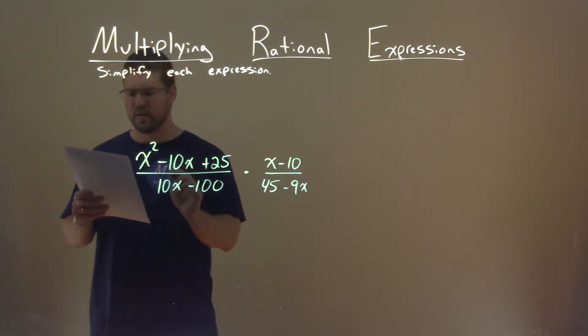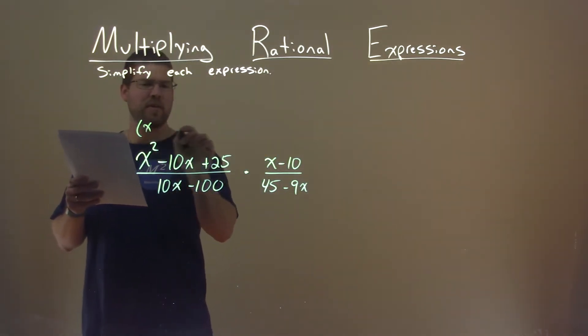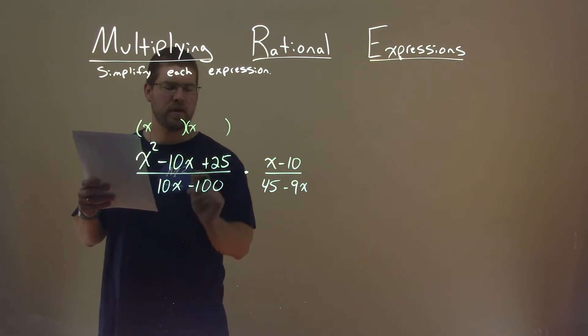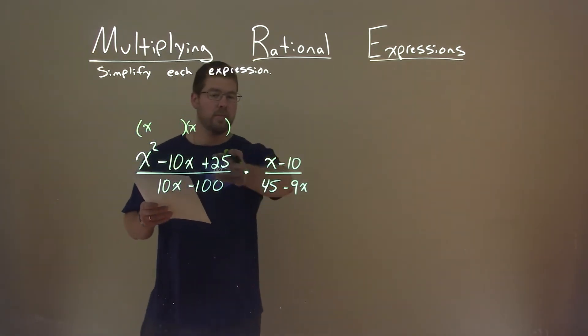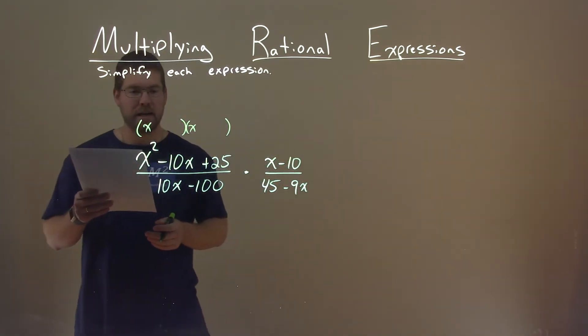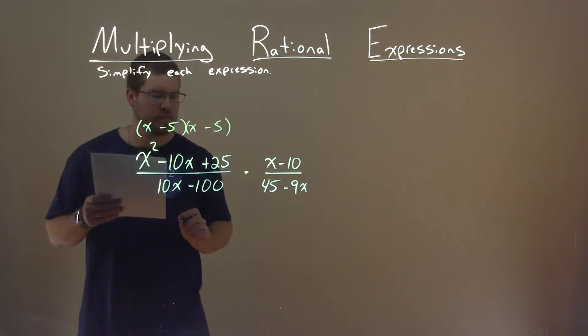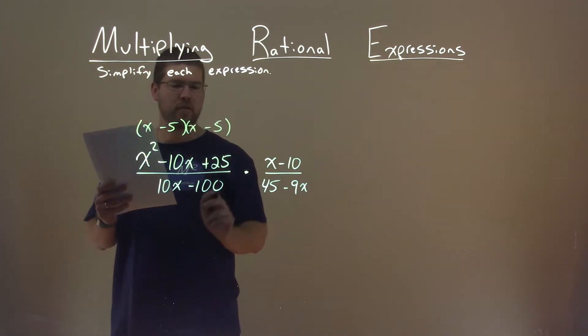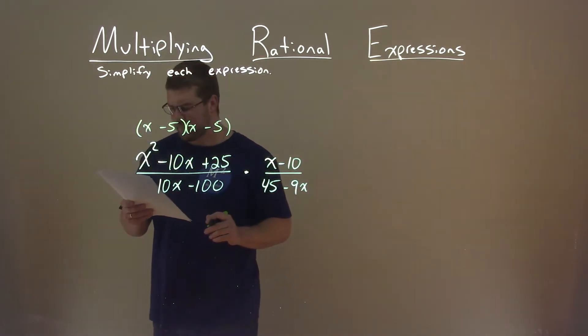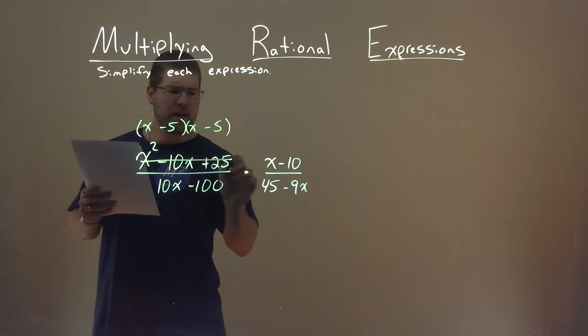Well, this first part right here looks like it factors pretty easily. So let's do that. What two numbers multiply to be positive 25 but add to be negative 10? That's minus 5 and minus 5. Minus 5 times minus 5 is 25. Negative 5 plus negative 5 is negative 10. All right. So we can cancel that out right here and just rewrite it in factored form.